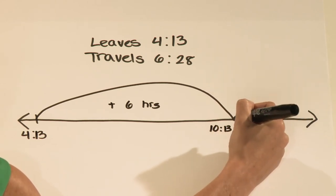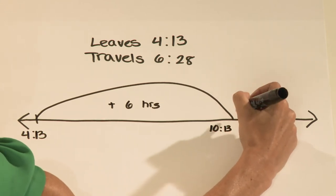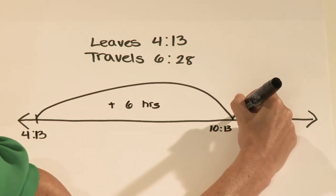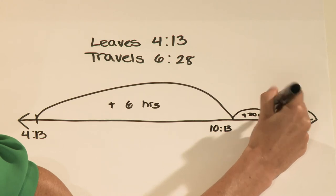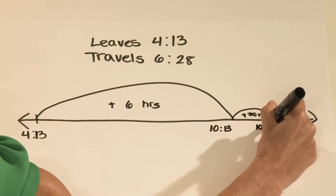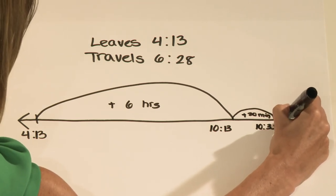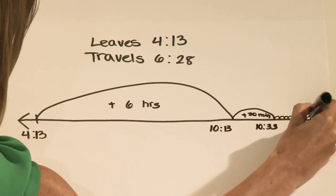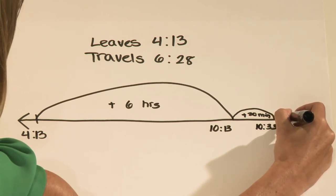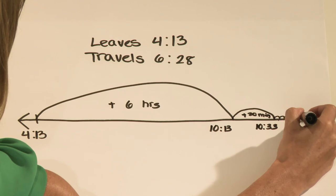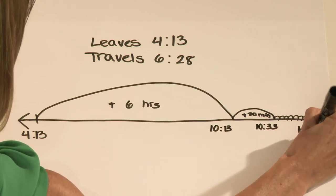This would have taken much longer to do on an analog clock. Then we need to add our 28 minutes. So I'm going to add 20 minutes to end up with 10:33 PM, and then do 8 jumps of one minute each: 34, 35, 36, 37, 38, 39, 40, 41. That's 10:41 PM. The train arrives at 10:41.